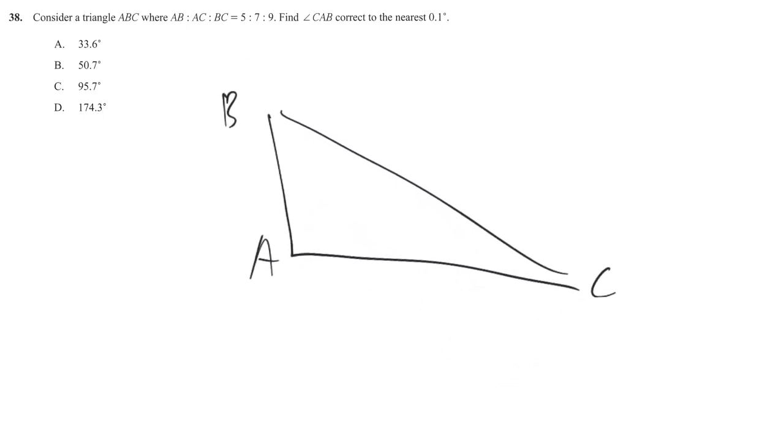And then what we know is, if AB is 5, then AC is 7, while BC is 9. This is not paper 1, so you don't write down 5K, 7K, 9K, it's totally fine.